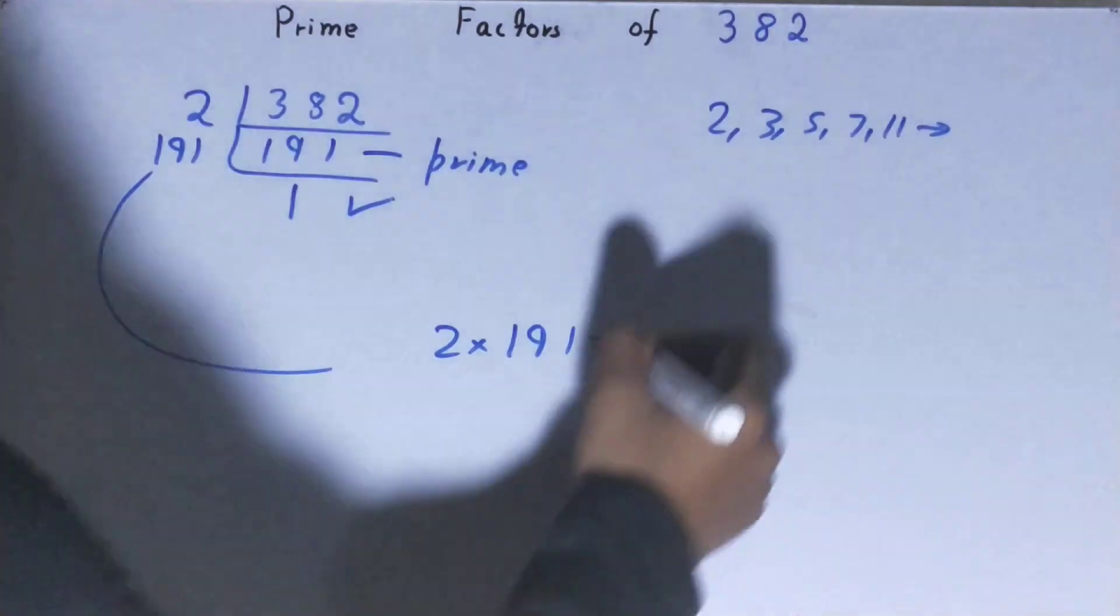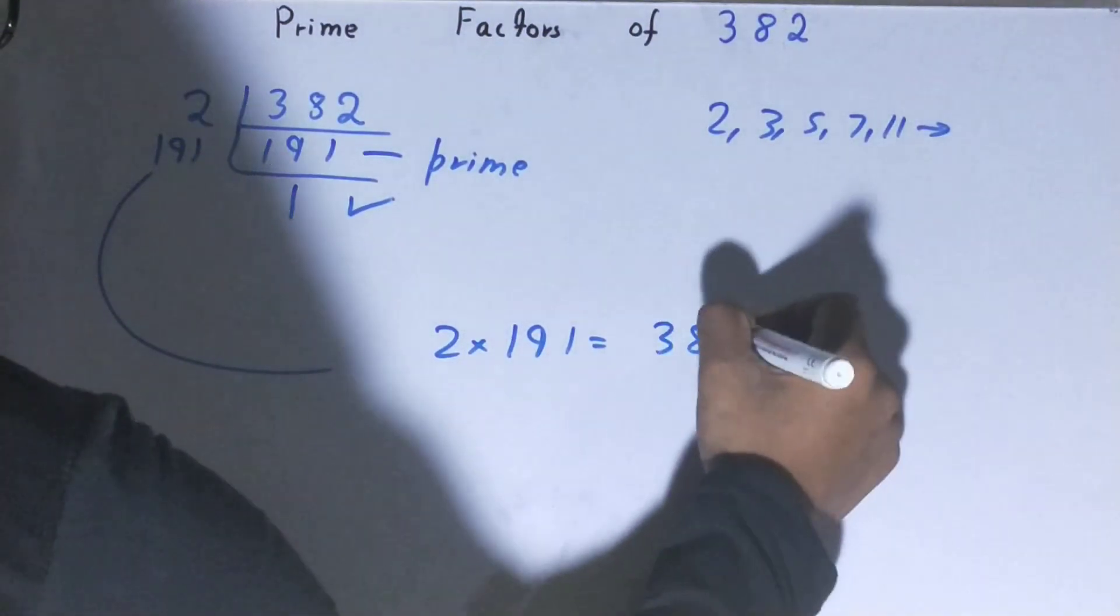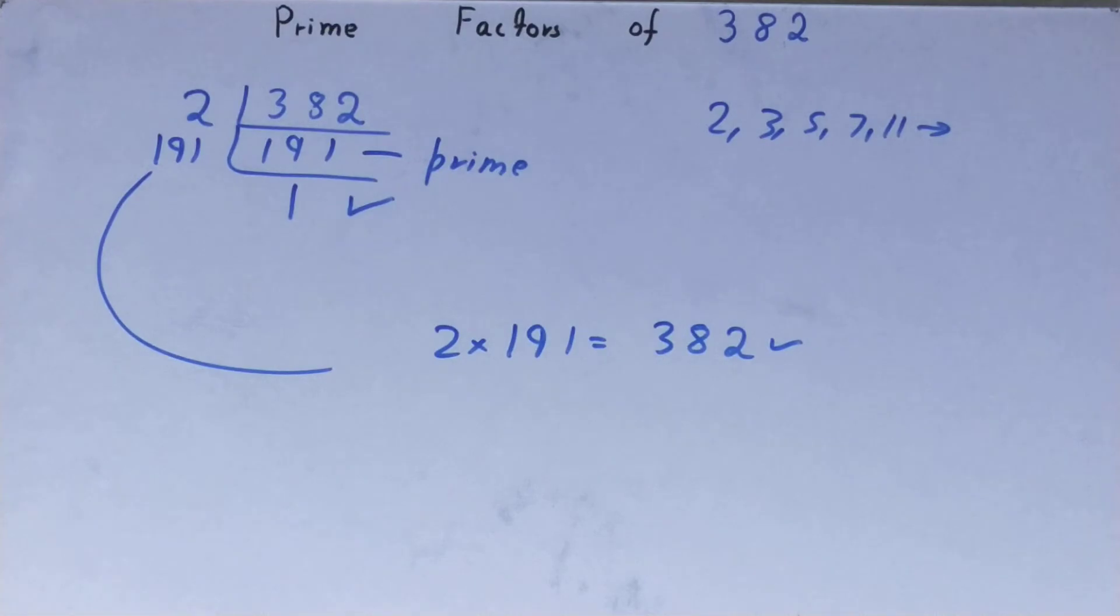If you want to check whether it is right or not, you can multiply them, and if on multiplying you have the number back again, that means your calculation is correct. If not, you need to recheck. So this was all about prime factors of the number 382.